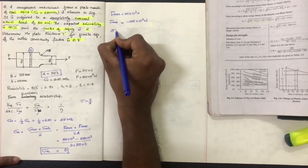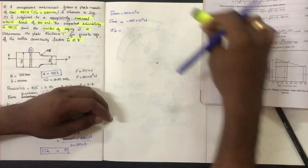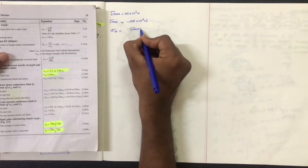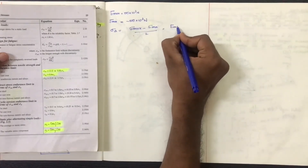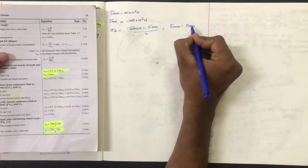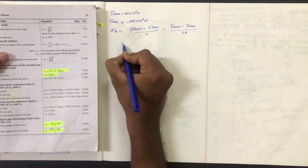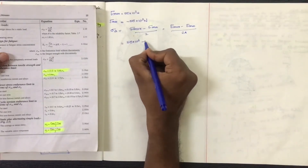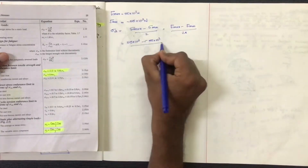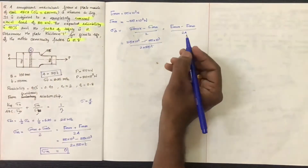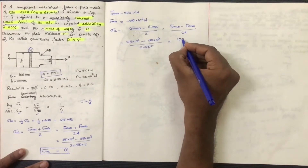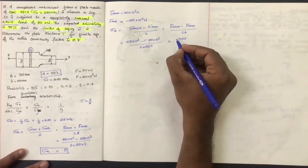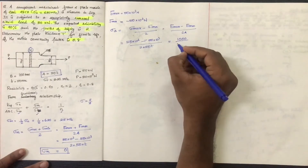Sigma A equals (Sigma_max − Sigma_min) / 2, which is (F_max − F_min) / (2 × Area). With F_max = 50 × 10³ N and F_min = −50 × 10³ N, and area = 50 × T (width × thickness), Sigma A works out to 1000/T MPa.